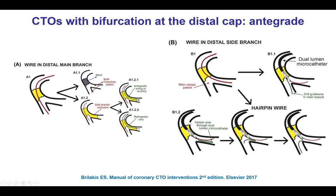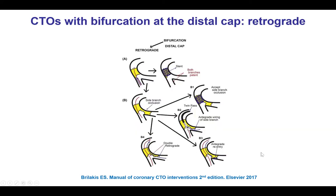Another option is to use a dual-lumen microcatheter to form a hairpin wire, which is essentially a polymer-jacketed wire — usually a Fielder FC — with a 3 cm distal bend, advanced knuckled into the side branch. When it is withdrawn, it unwraps and enters the main branch. Another option, of course, is to go retrograde and advance a retrograde guide wire through the main branch.